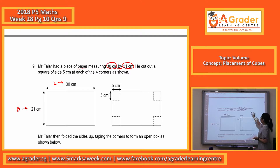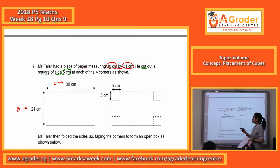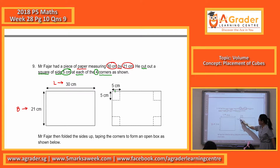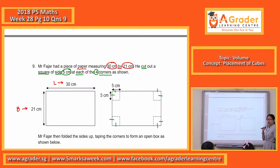They tell you that he cut out a square of size 5cm at each of the 4 corners, as shown. This is the square. All of them are the same — 5cm, 5cm, 5cm — all cut out from the 4 corners.